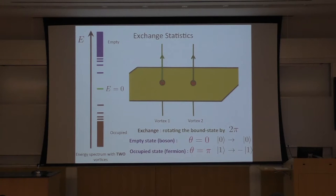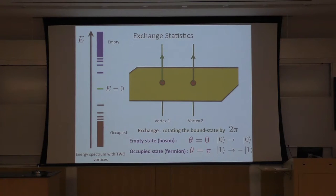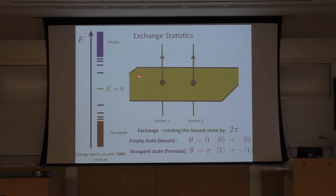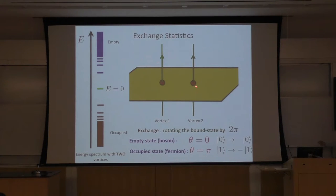How about exchange statistics? If I have two electrons and I exchange them, the wave function picks up a negative sign. How about Majorana fermions? This situation is slightly different because I have vortices as well — this is a problem of the bound state between fermions and vortices. If you have just vortices and wind them around each other, you don't get anything special if they don't carry zero modes. But when we have zero modes attached to these vortices, then we may get something non-trivial.